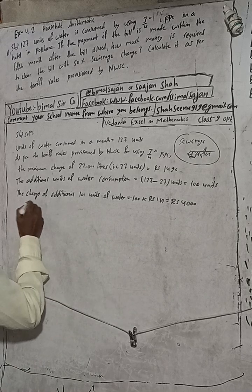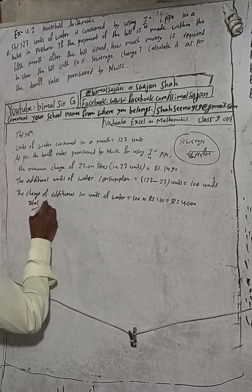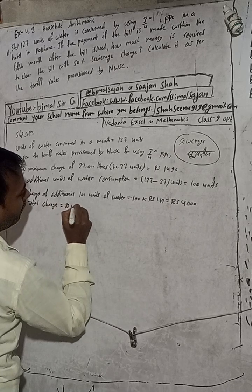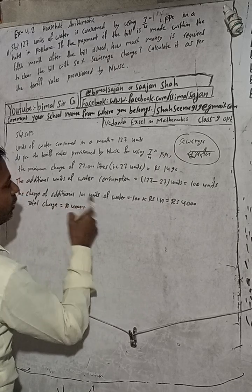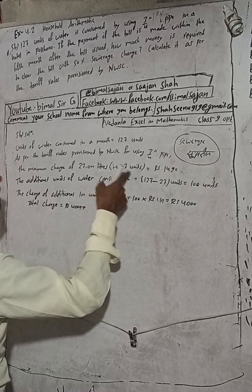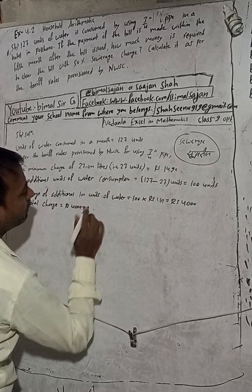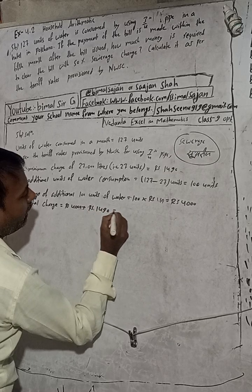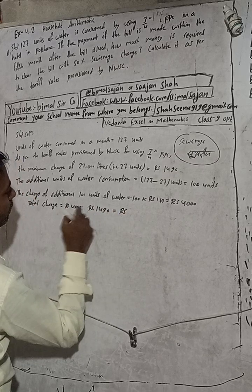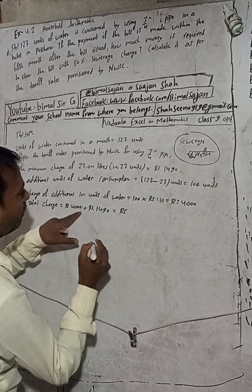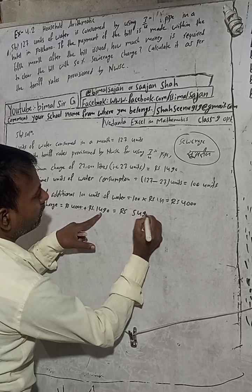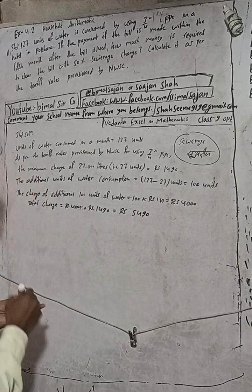Total charge is equal to the additional charge of 4,000 plus the minimum charge of 1,490. When you add this, you get 5,490 rupees as the total charge.